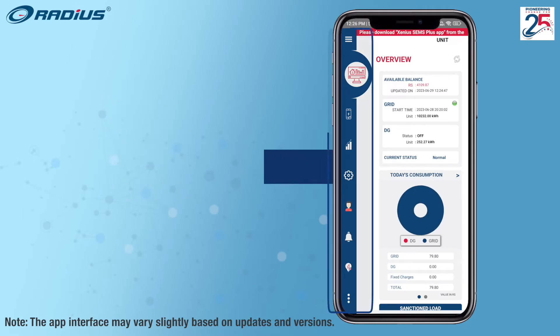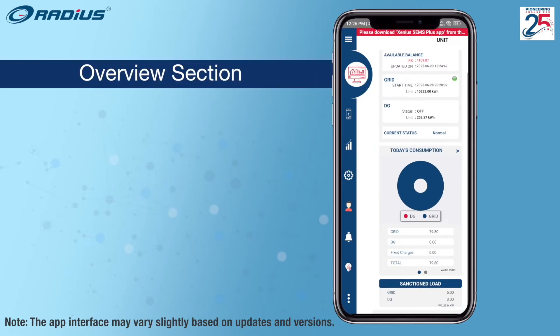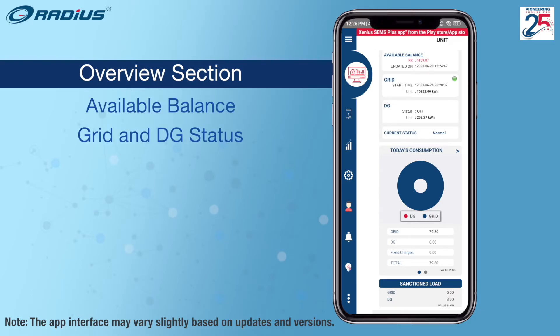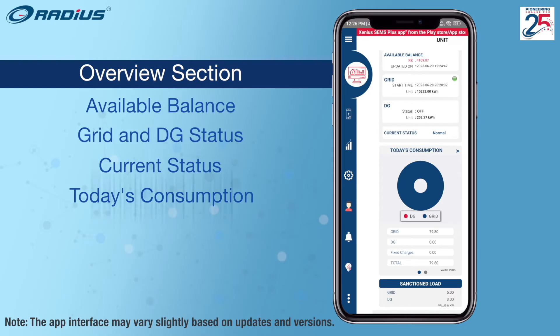The menu bar will now appear, where users can find the overview section, which allows users to check the available balance, bid and DG status, current status, today's consumption, and sanction load.